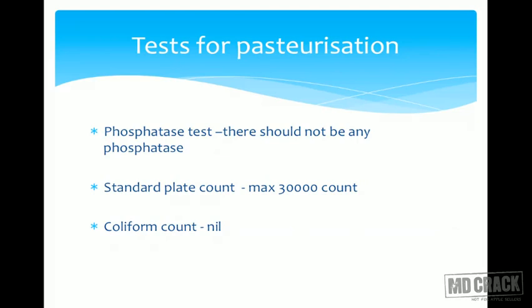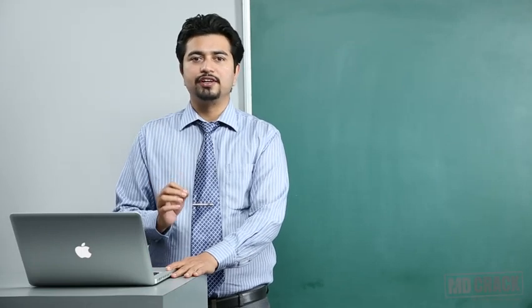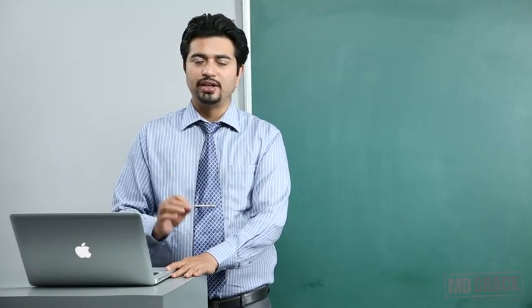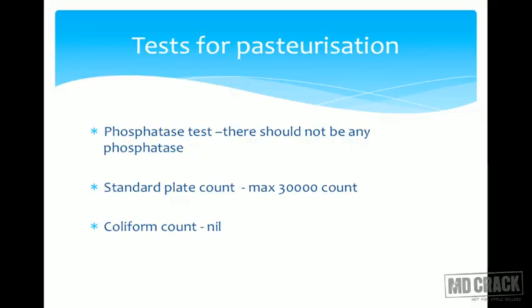To test if pasteurization is successful, three tests are used. The phosphatase test: after pasteurization, phosphatase must be completely destroyed — no phosphatase should remain. The standard plate count: a maximum of 30,000 bacteria per milliliter is allowable; above 30,000 is unacceptable. The coliform count should be nil, as coliforms are contaminants.